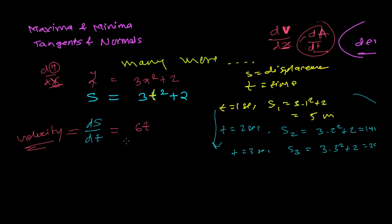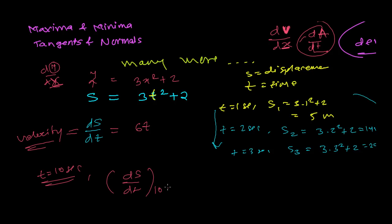Now, if the question asks: what is the rate of change of displacement when time is 10 seconds? I simply evaluate ds/dt at t = 10 seconds, which gives 6 × 10 = 60 meters per second. So 60 m/s is the rate of change of displacement at 10 seconds.